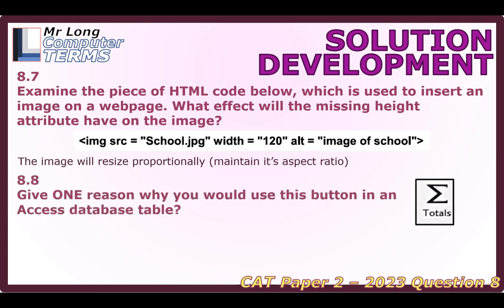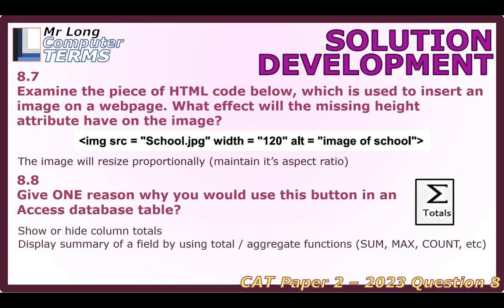For question 8.8, we need to give a reason why you would use the Totals button in an Access database table. You may have used it most often in a query when doing groupings, but here they're talking about tables. When you've got a table of data, clicking that button adds an extra row at the bottom where you can do aggregate functions — sum, max, min, count, or average a column. Clicking it again hides it. Note: in tables we're totalling overall, not grouping as in queries.